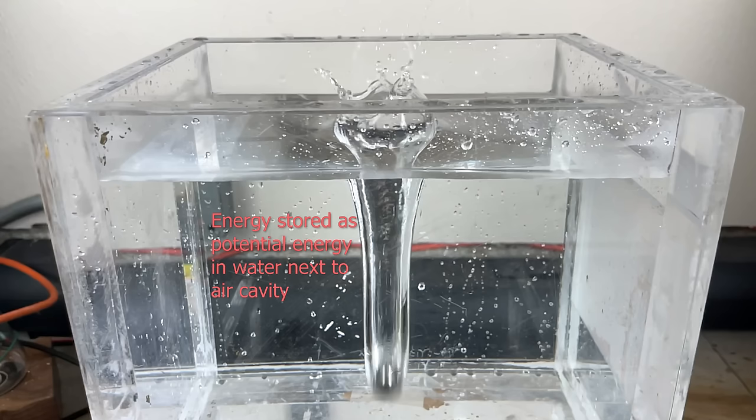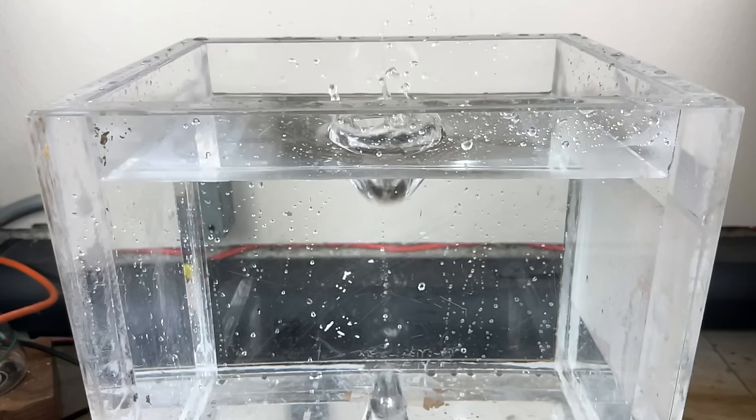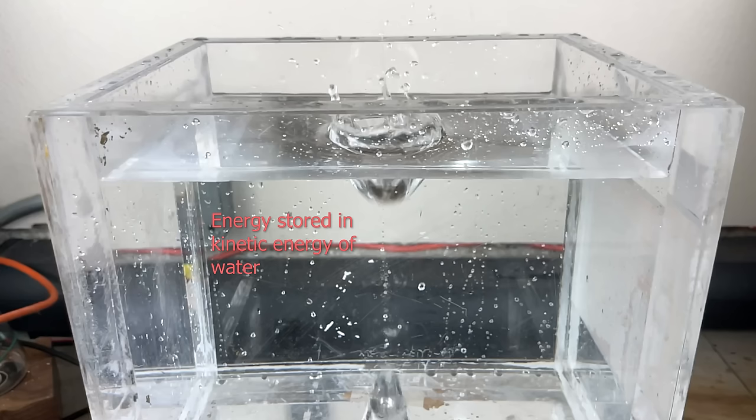This takes energy to do. And that energy reduces the speed of the ball and it's now stored as potential energy in the water. Then the water suddenly collapses back together. So the entire volume of that cavity is collapsing down to one point. This creates an extremely fast jet of water that shoots out of the center.